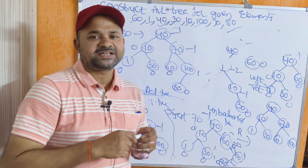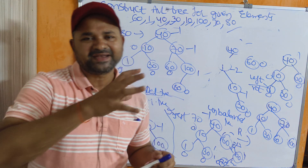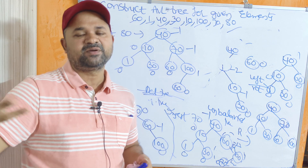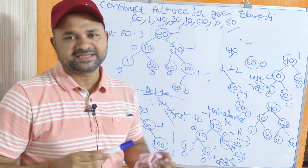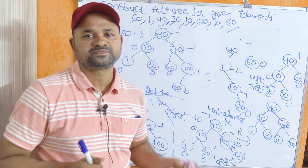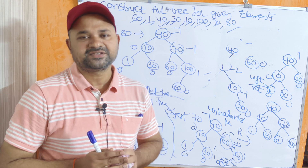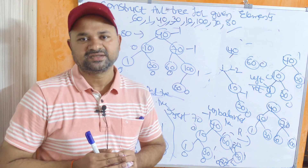In the next video, we will see one more example on the AVL tree using strings like January, February, and other months. Please like the video, subscribe to the channel, and share the channel with your friends. Thanks.